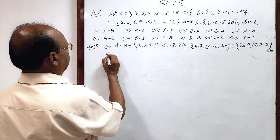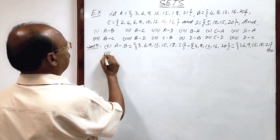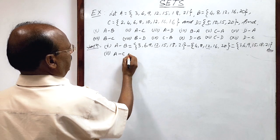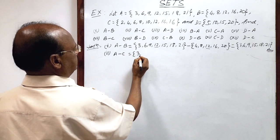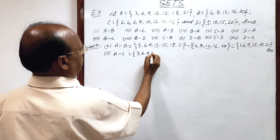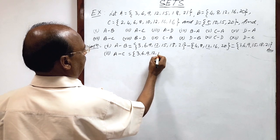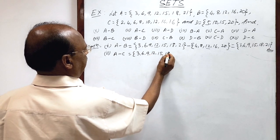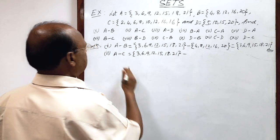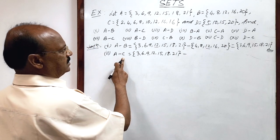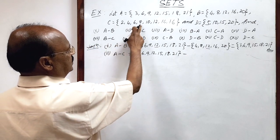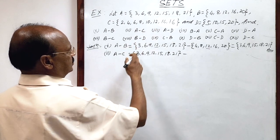Now the second part, A minus C. Write these sets. A is having elements 3, 6, 9, 12, 15, 18, and 21, minus set C. Set C is having elements 2, 4, 6, 8, 10, 12, 14, and 16.